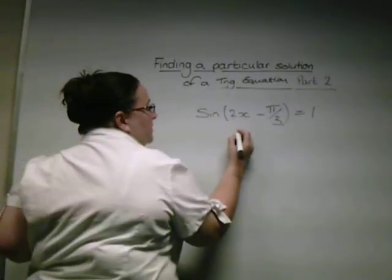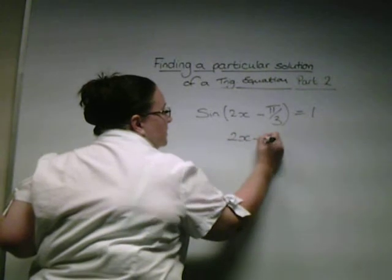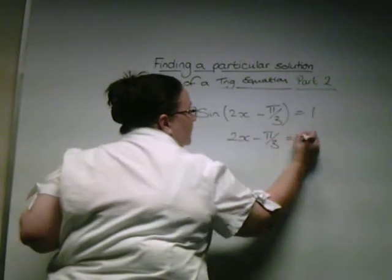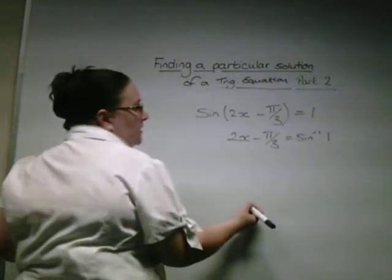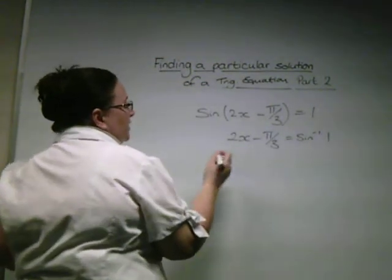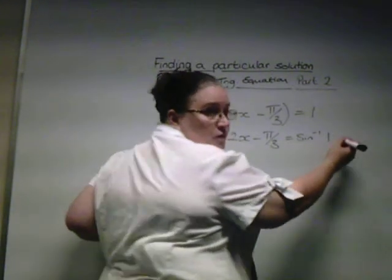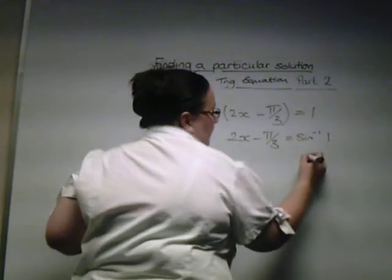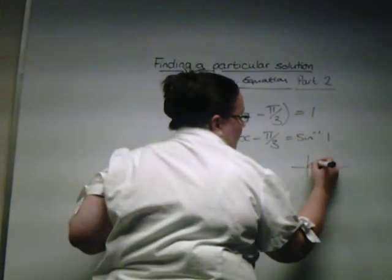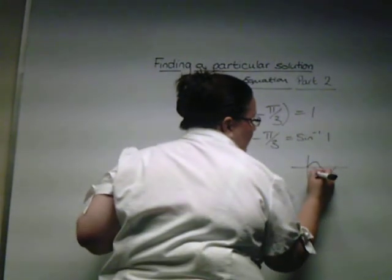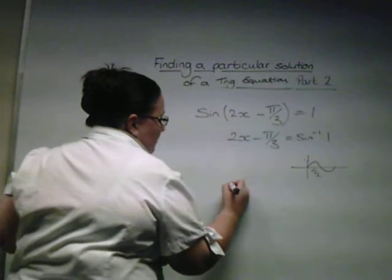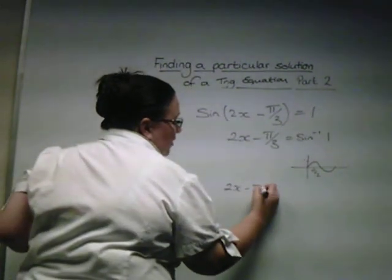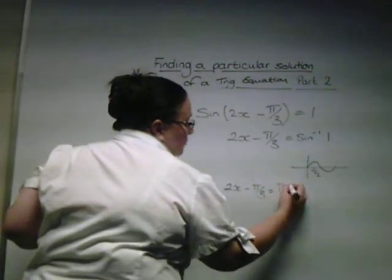First thing I'm going to do is find the inverse sine of 1. Hopefully you remember from your graphs, thinking about how the graph goes for sine x. We start and we go like this. We know that's 1 there. So we know that 2x minus pi by 3 must equal pi by 2.